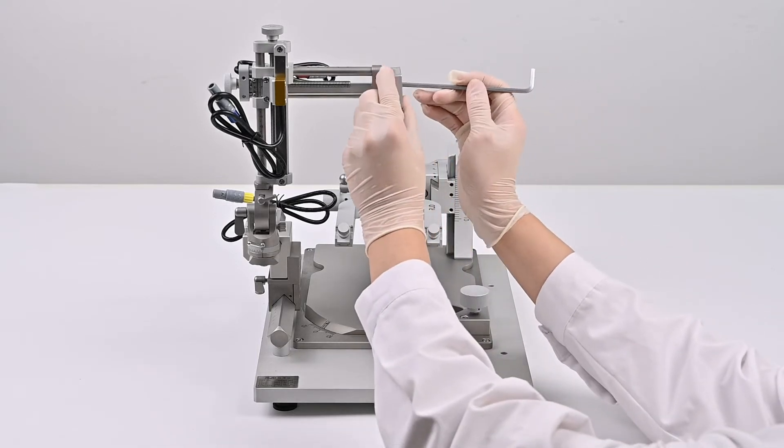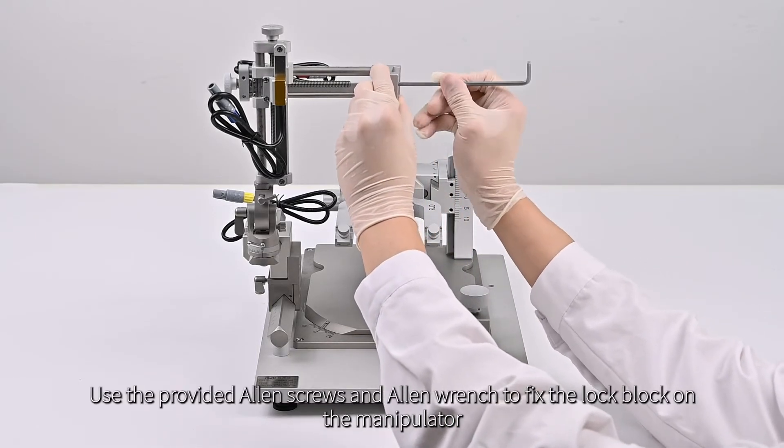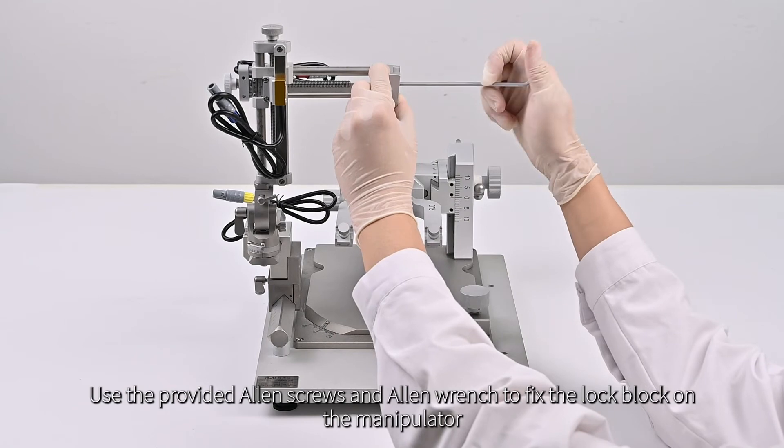Take out the lock block. Use the provided Allen screws and Allen wrench to fix the lock block on the manipulator.